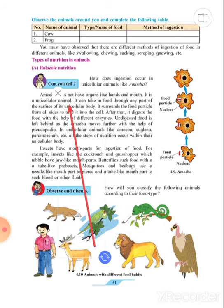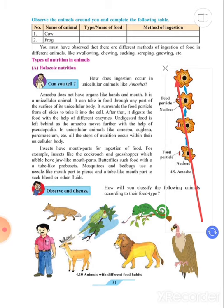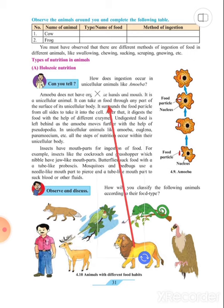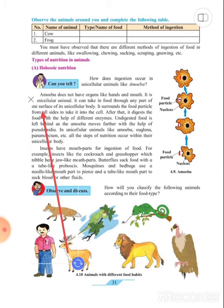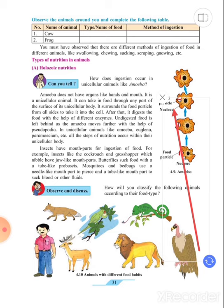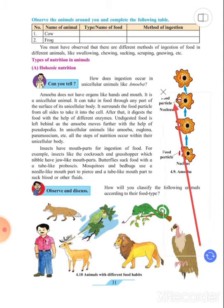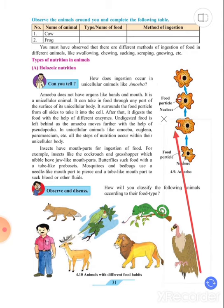Amoeba does not have organs like hands and mouth. It is a unicellular animal. You can observe here, this is the amoeba. It does not have organs like hands and mouth because it is unicellular. It can take in food through any part of the surface of its unicellular body. It surrounds the food particle from all sides to take it into the cell with the help of pseudopodia. This part is known as pseudopodia.